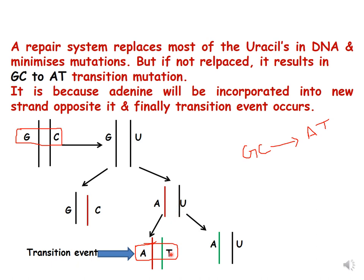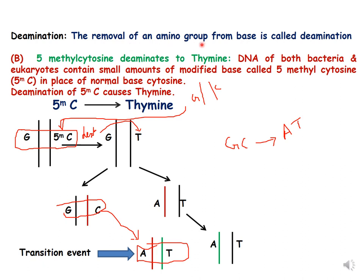In the next round of replication, when the two DNA strands separate, adenine will pair with thymine. Comparing with the original, G-C has been replaced with A-T — this is an example of a transition event. There is a repair system that replaces most uracils in DNA and minimizes mutation, but if they are not replaced it results in a G-C to A-T transition mutation, because adenine is incorporated into the new DNA strand opposite the uracil.